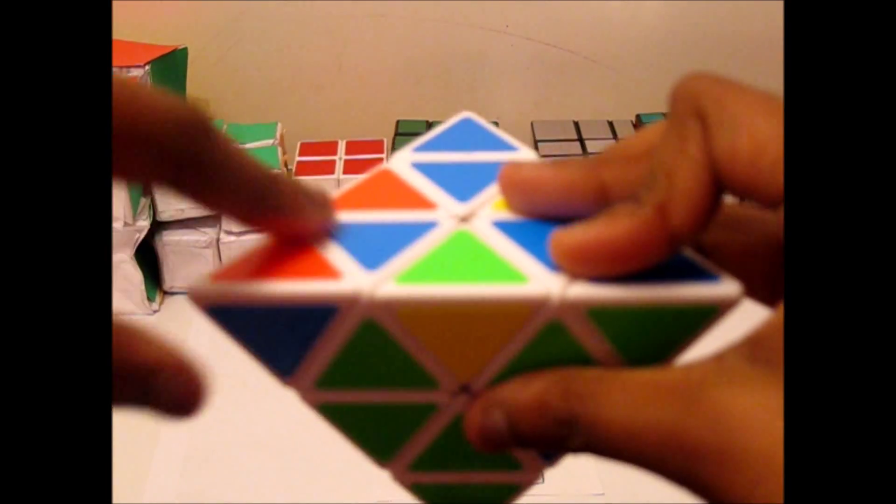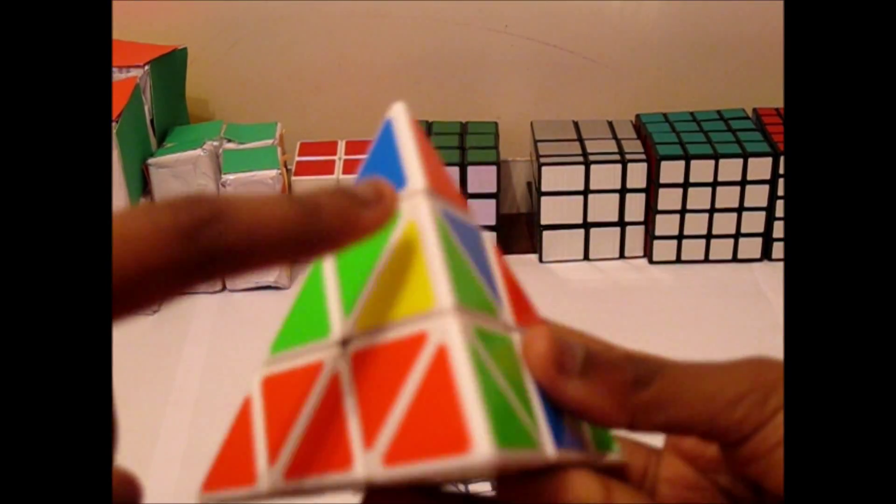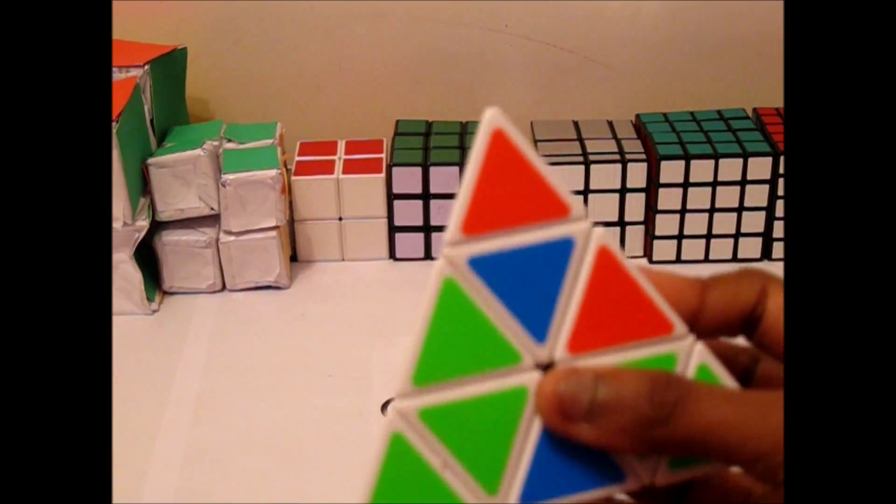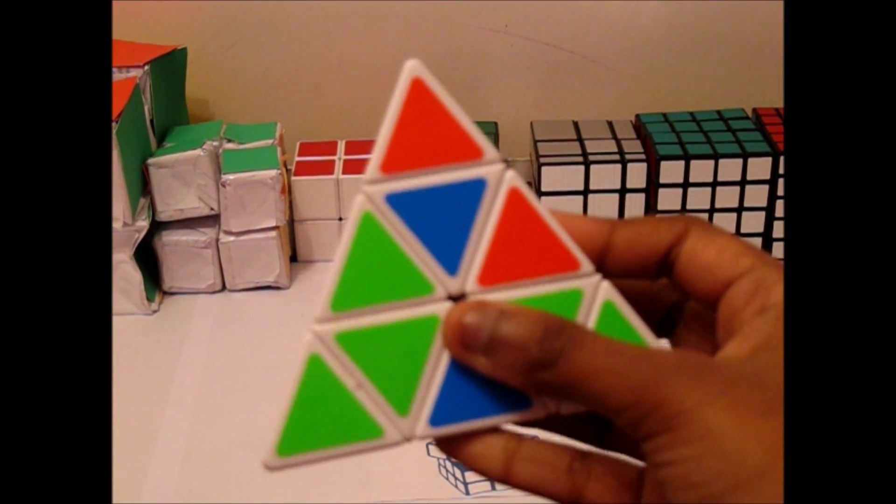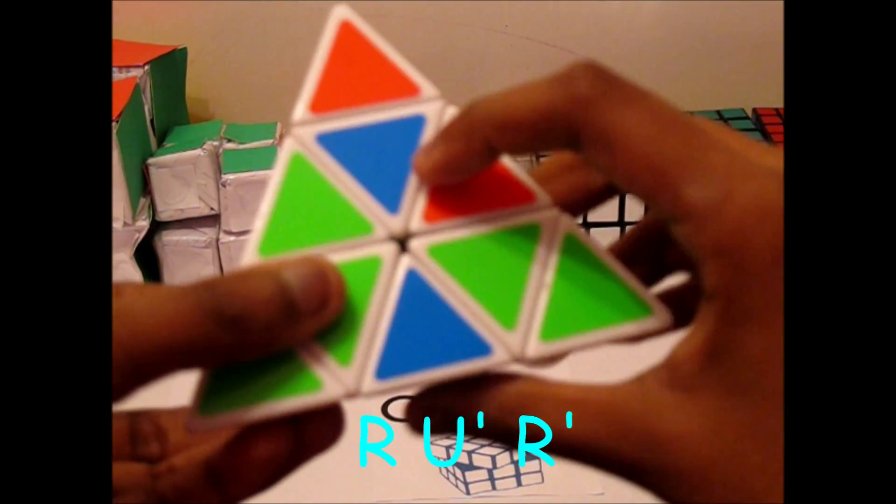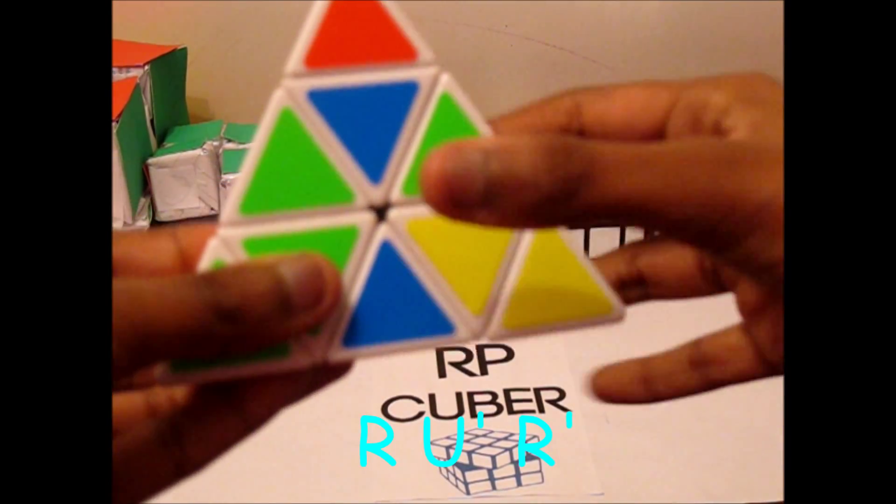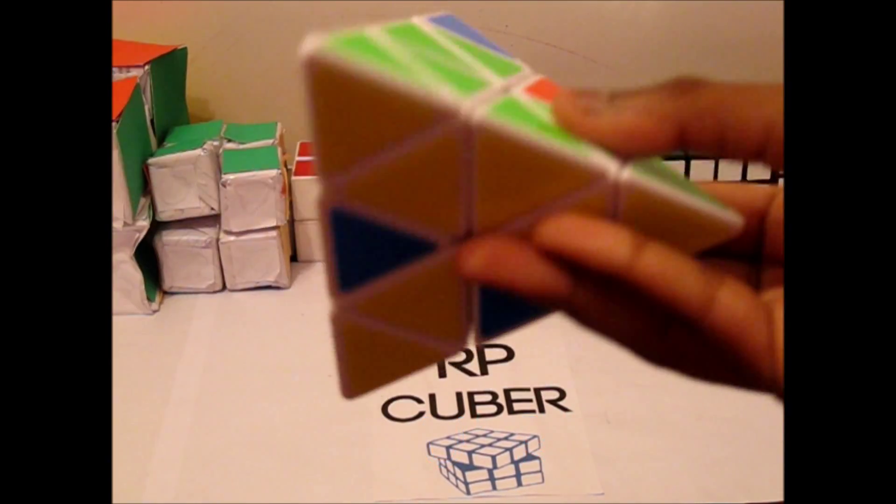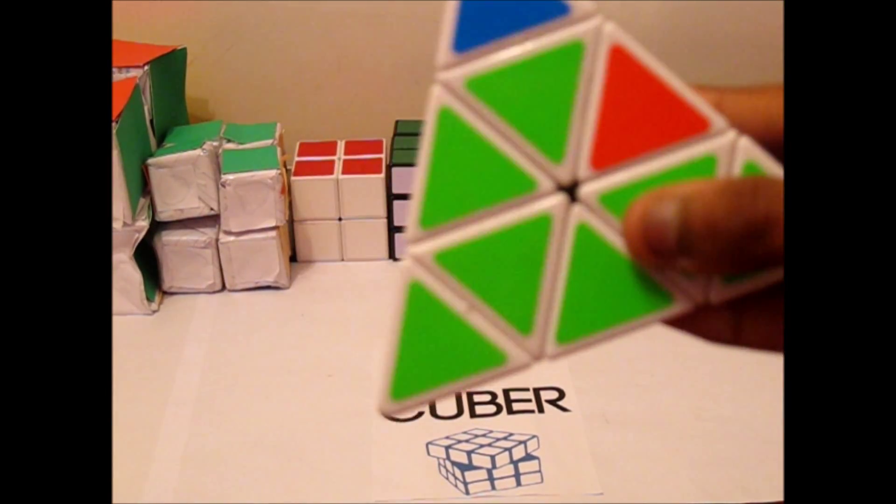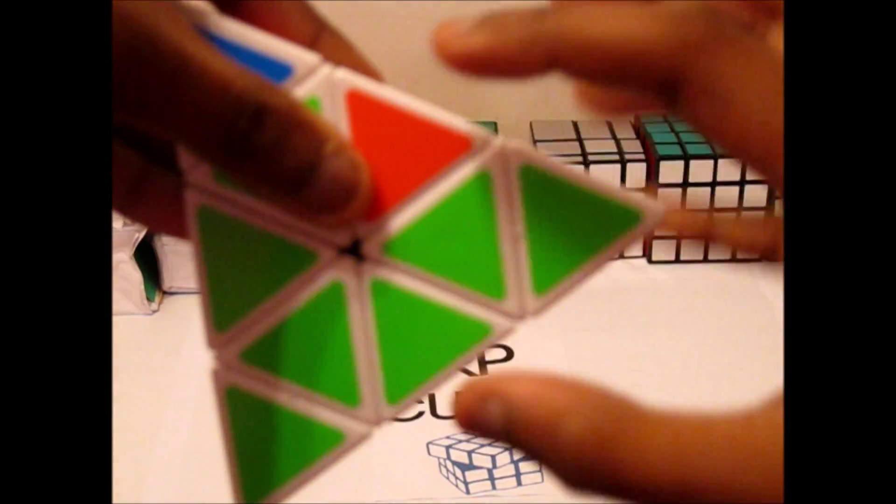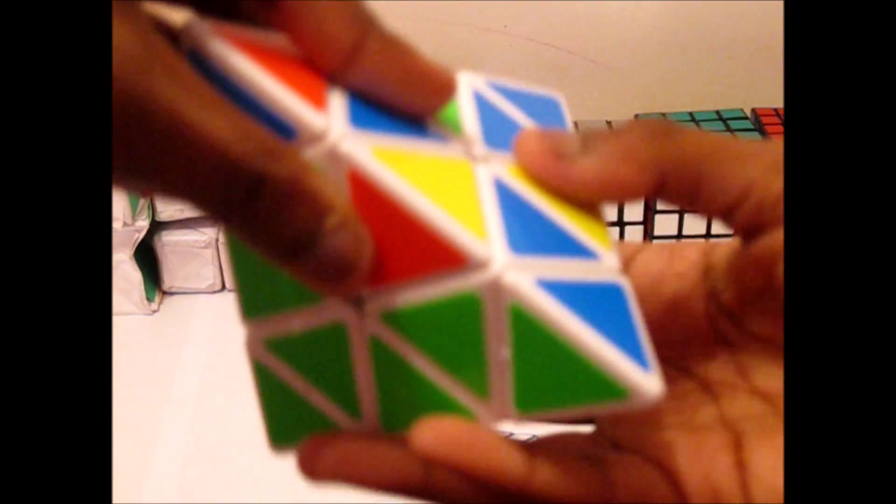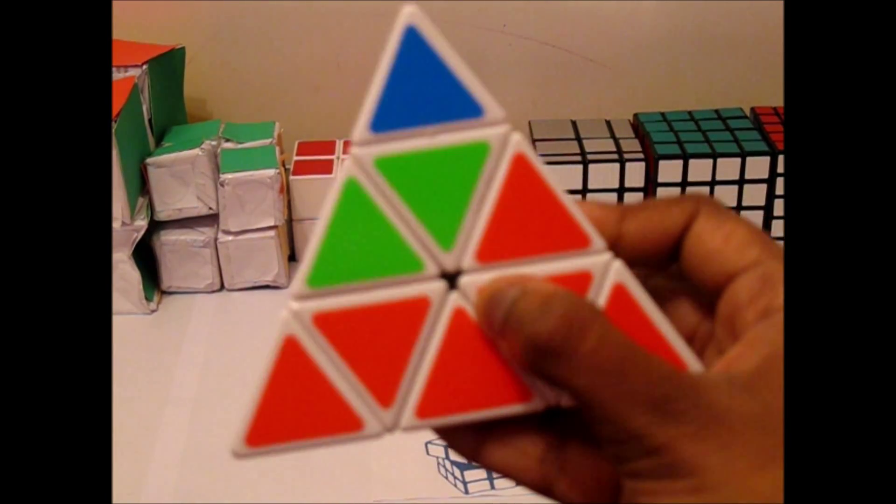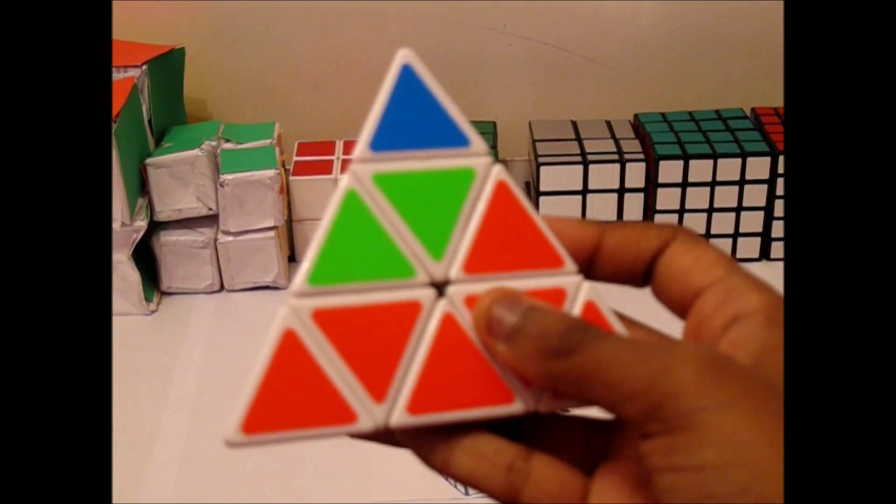And you need to find an edge with yellow on it. So here's a green and yellow edge. So all you have to do is align this green like this. So it needs to be like this, not like that. Like that. So when the yellow side is on the left to you, on the left of you, you need to bring the right side up. So right, and then you do up, and then right counterclockwise. So that places the edge in for you.